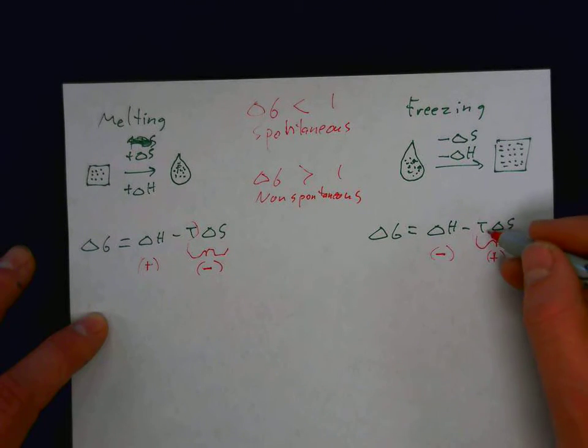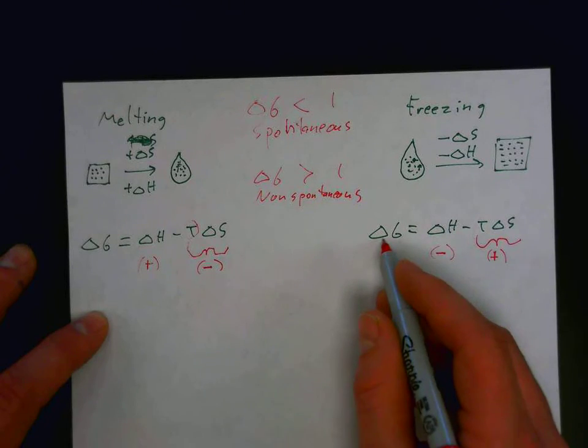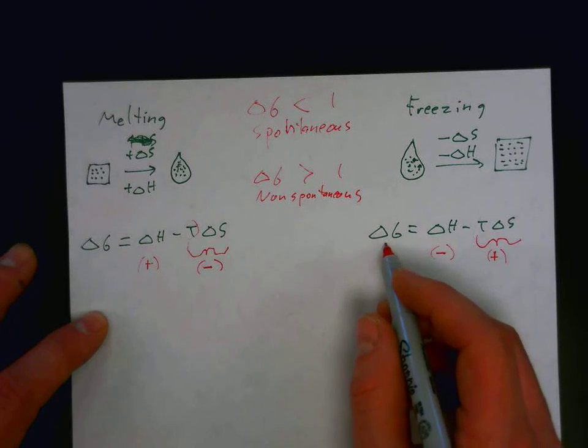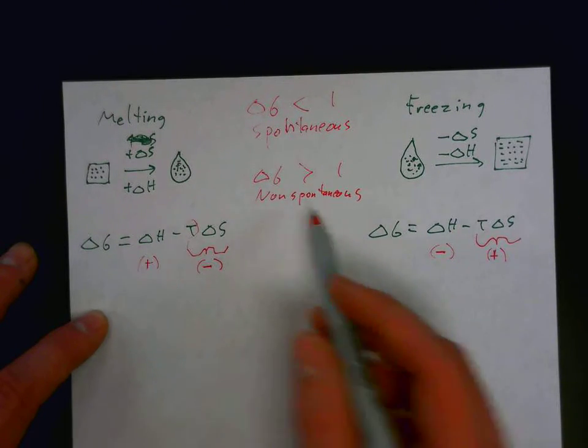And again, if the temperature was high, then we would see that delta G would be positive, and the free energy change of greater than zero is non-spontaneous.